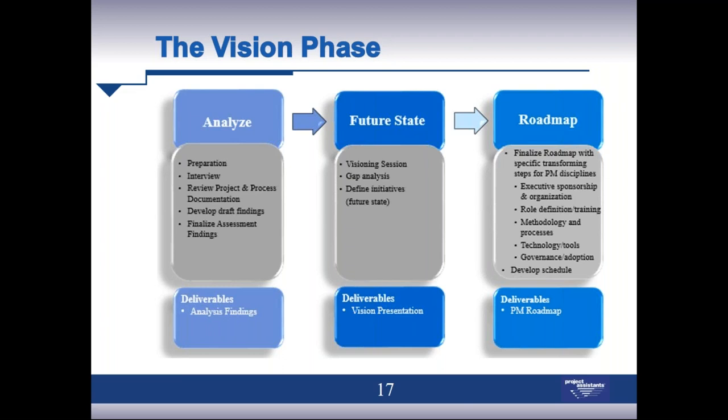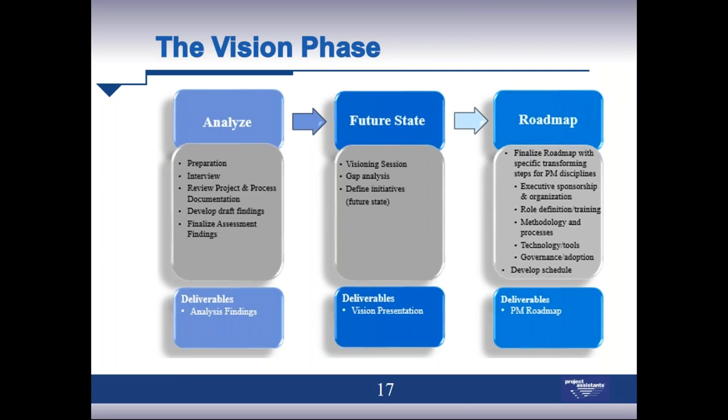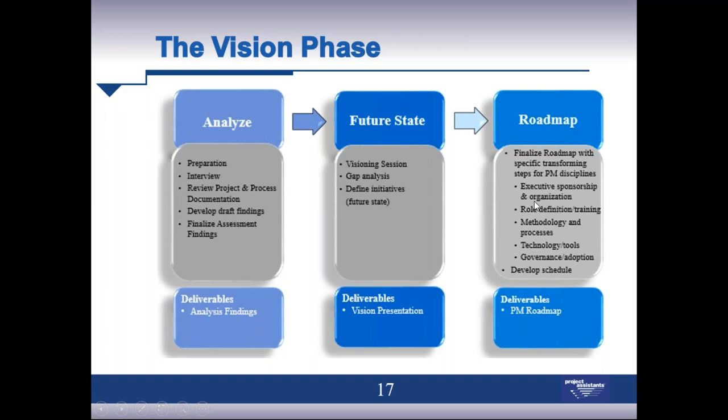How do you make an organization more successful in how it delivers its commitments around projects? When we think about how Microsoft Project supports that, the idea is the roadmap — the outcome from current state to future state, what we're going to change. We see a series of initiatives: methods changes, skills changes, organizational changes. If you look at the four dimensions on slide 16 — process, technology, people, organization, and governance — these represent organizational change management as well.